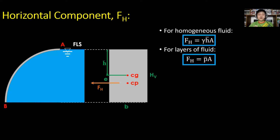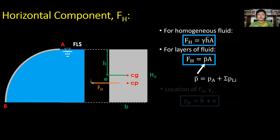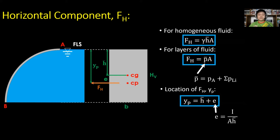For P-bar, it is the sum of pressures up to the center of gravity. For the location of F sub H, represented by Y sub P, from the figure, Y sub P is equal to h-bar plus E, where E is equal to I over the product of A and h-bar of the projected surface.